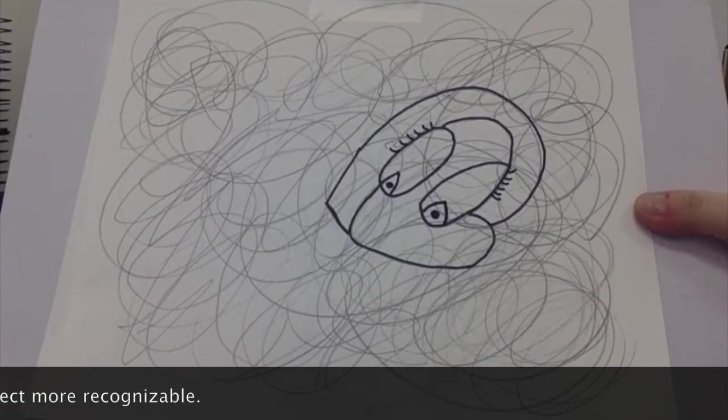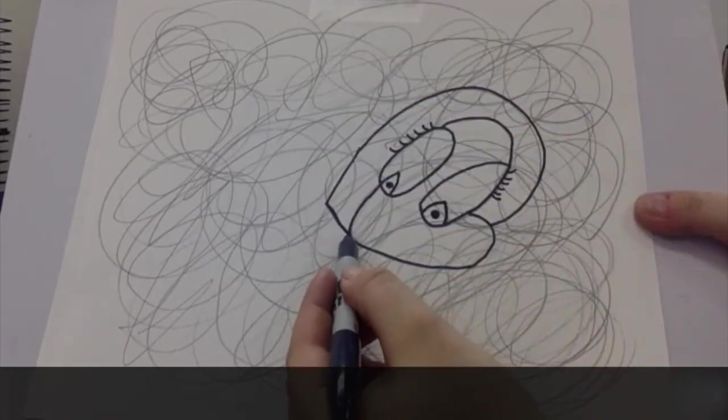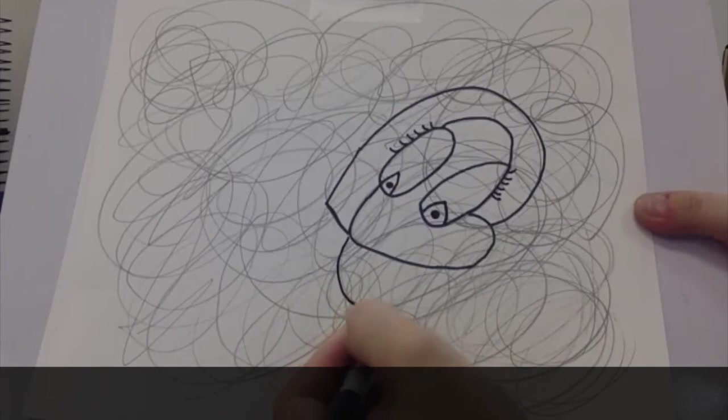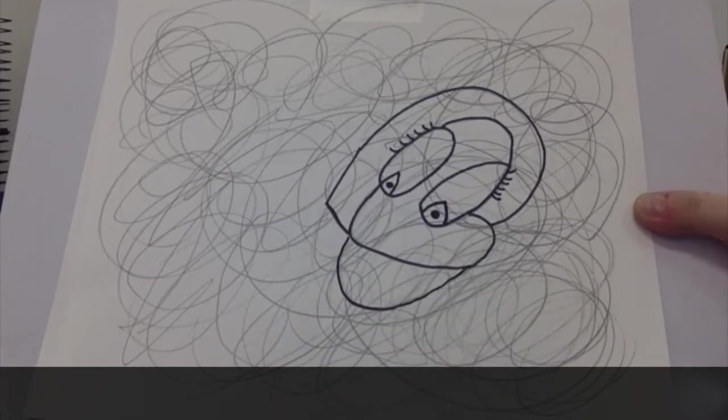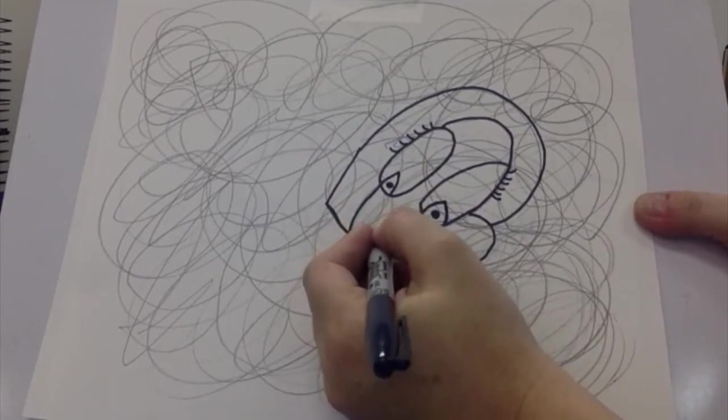And I don't have a mouth yet, but I see that this line that's already in the scribbles might make a very good chin. And then since I'm already making it kind of girly, I might just add some lips.